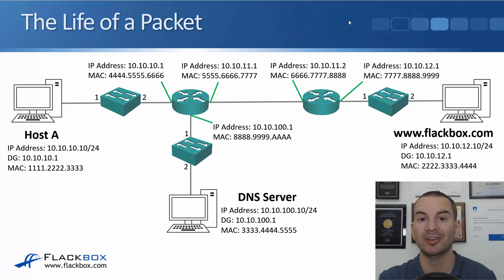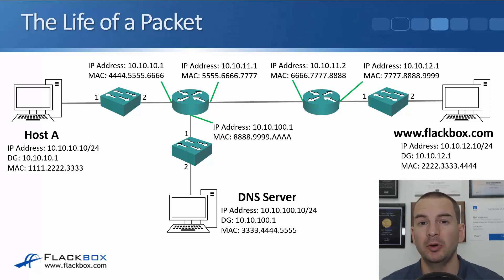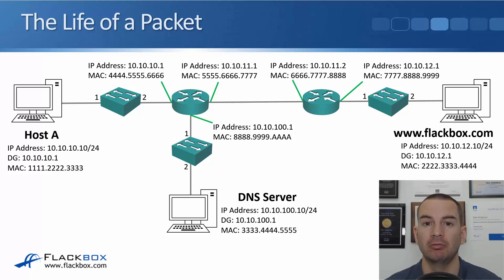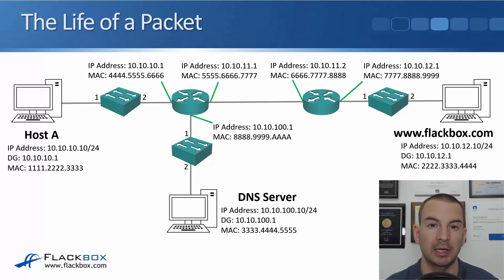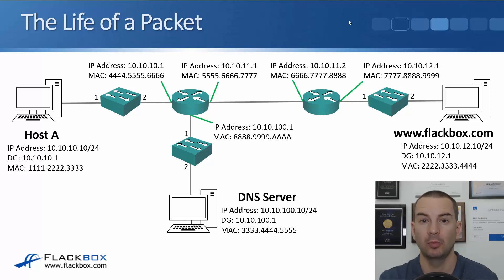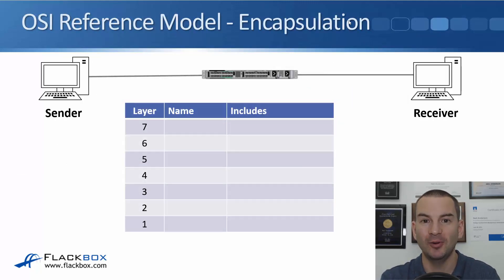It's a routed network with different IP subnets and a couple of routers in the middle of the topology. I've deliberately included multiple subnets, routers, and a DNS server to mimic what you would see on a real-world network. Because of that, there's quite a bit to this example, so I'm going to split this into two videos. The first part will cover resolving the FQDN to the IP address by DNS, and the second video will cover the HTTP traffic.